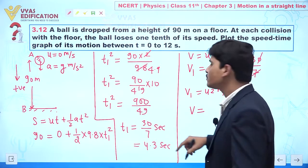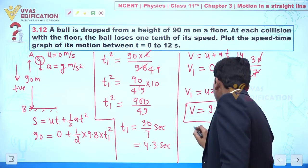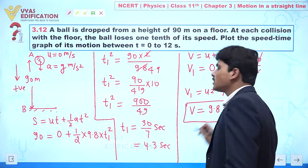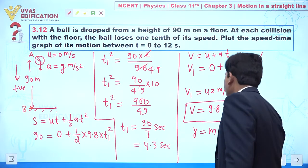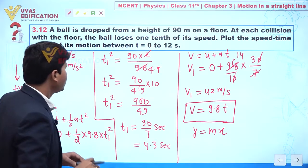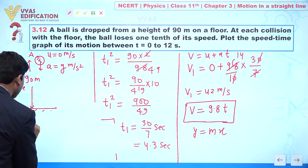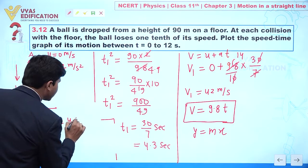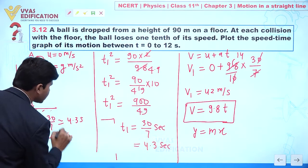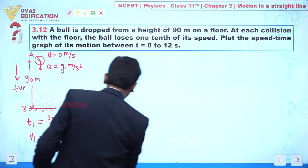The velocity expression in terms of time is v equal to 9.8 times t. So in this region from 0 to 4.3 seconds, velocity is varying linearly with time — this follows y equal to mx form. Important parameters found so far: t1 equals 30 by 7 seconds (approximately 4.3 seconds) and v1 equals 42 meters per second.